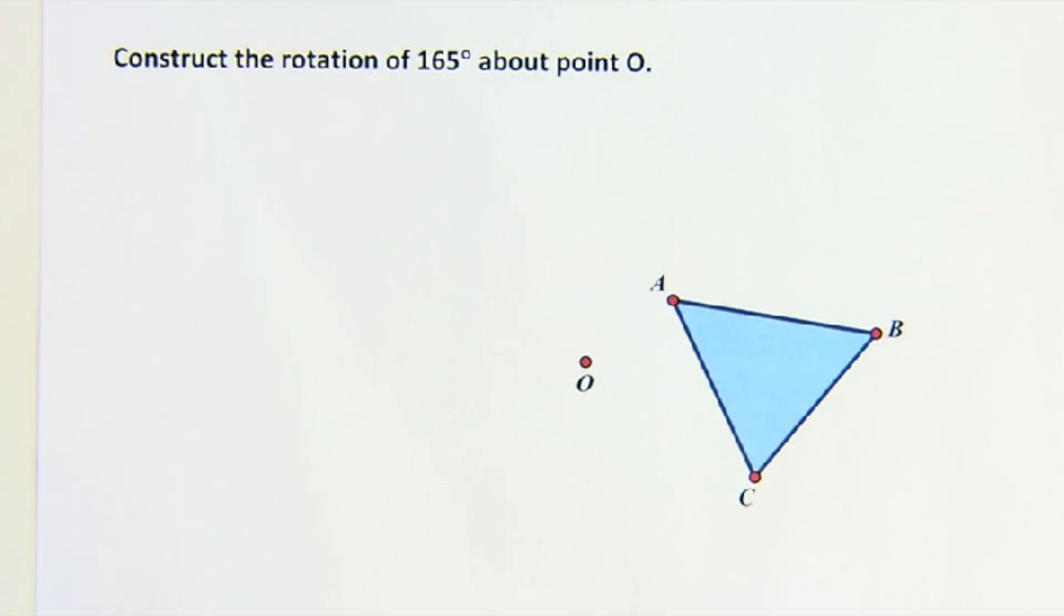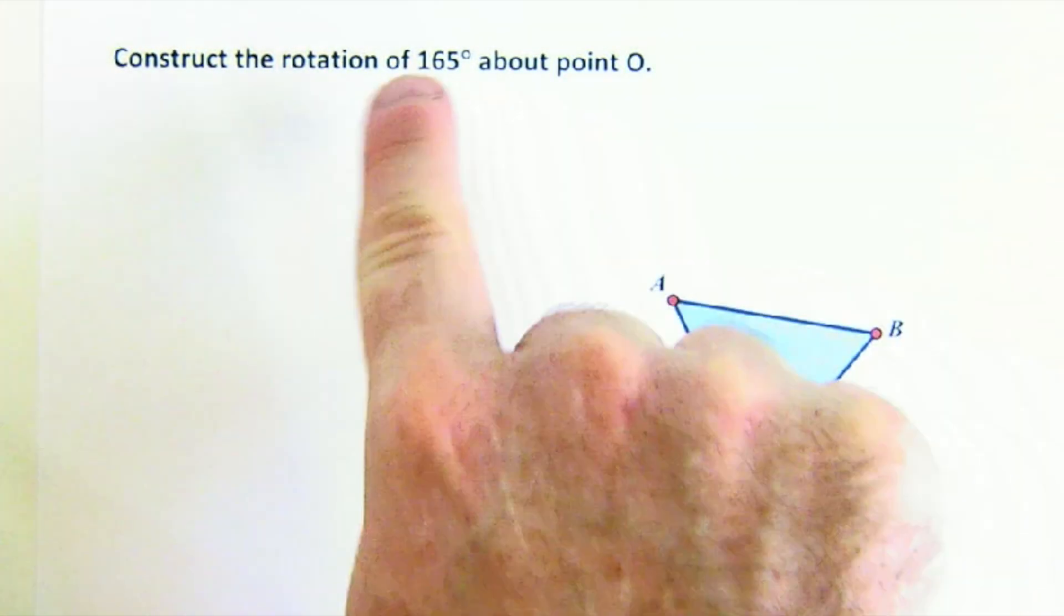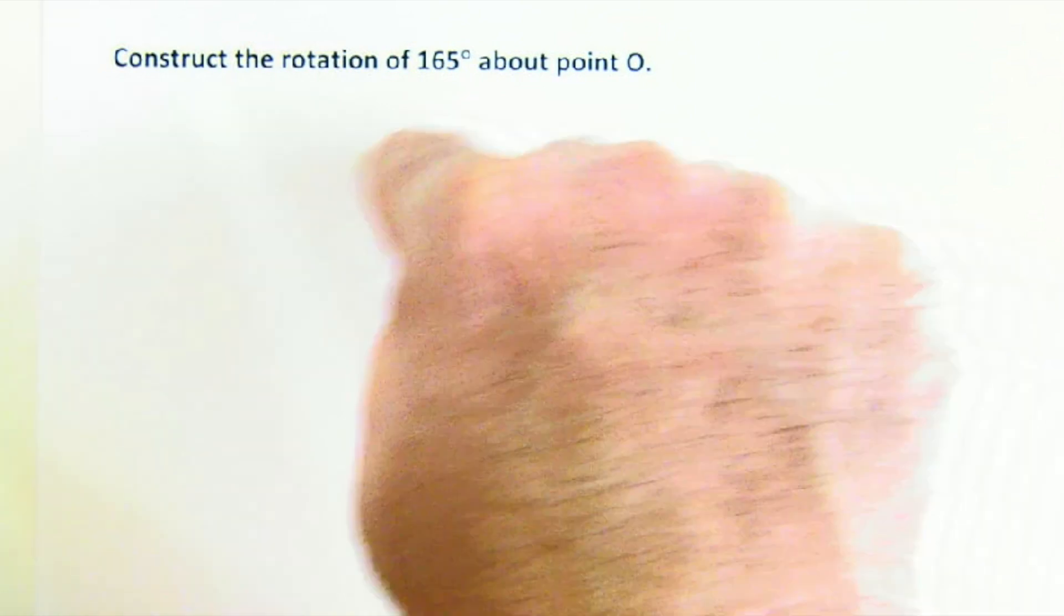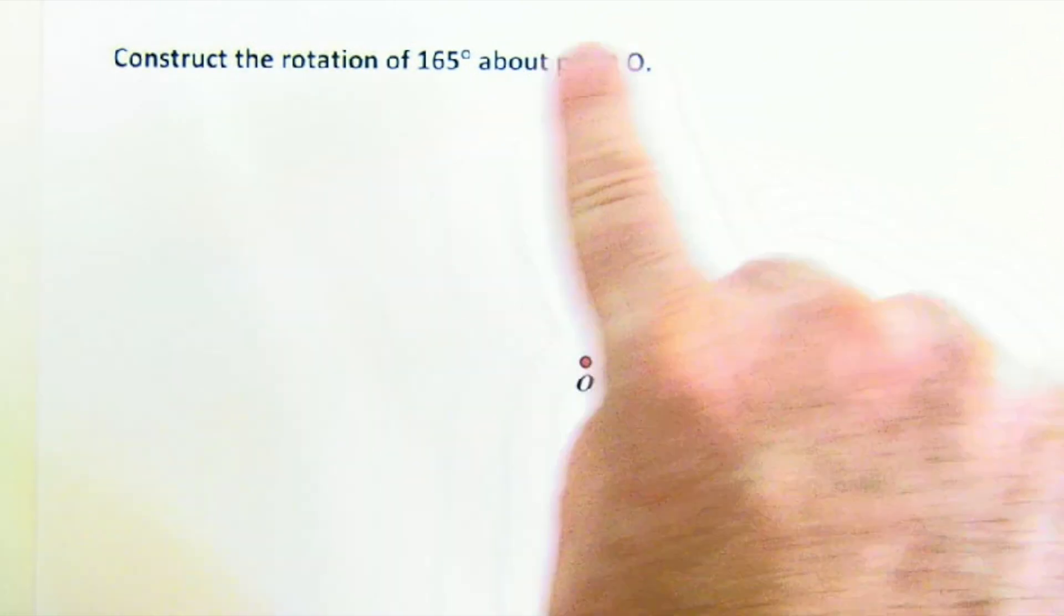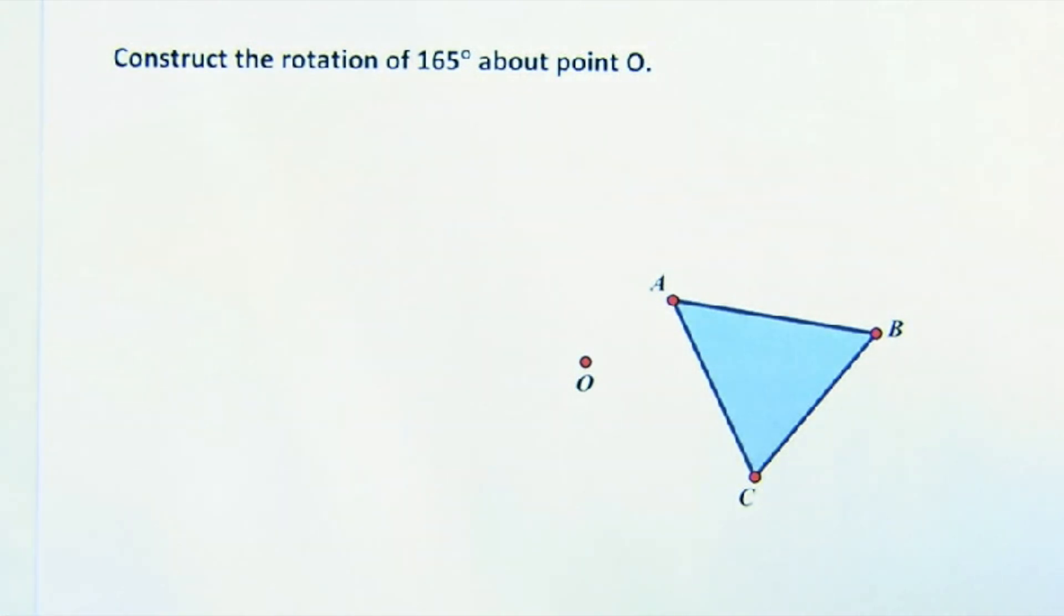We're going to construct a rotation of 165 degrees about point O. So here's point O, here's triangle ABC. 165 is in a counterclockwise direction because it's positive, so it's going to go this way. So here's how I go about doing it.